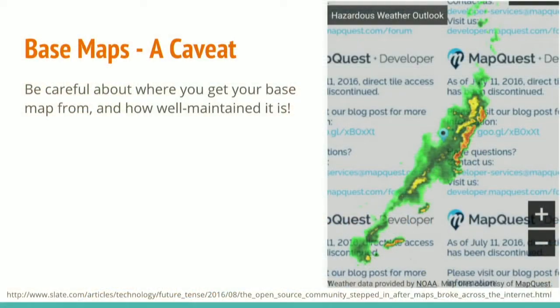One caveat about getting base maps: be careful where you get it from, and don't just throw a base map on a web app and expect it to work forever. Mapquest provided a free world base map for a long time, then started sending out notices that they were deprecating it, and eventually turned it off — people went to their weather site and saw a sad broken image. If you're using someone else's base map, you're using a service. Keep things up to date or you'll get a sad image background.